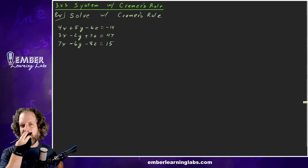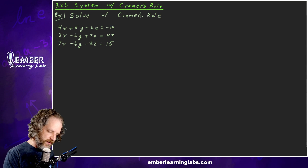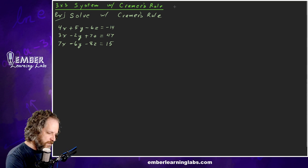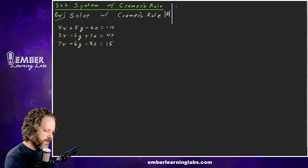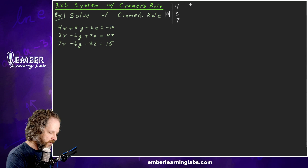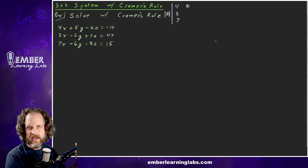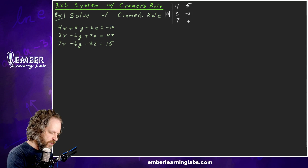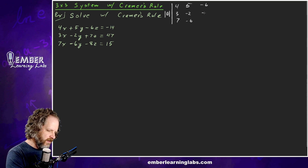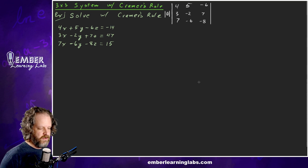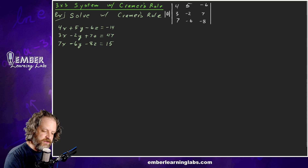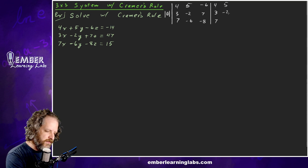Now let's do the 3x3 system with Cramer's Rule. Our D matrix uses all the coefficients. The X column is 4, 3, 7; the Y column is 5, negative 2, negative 6; and the Z column is negative 6, 7, negative 8. We need to find the determinant, so we rewrite the first two columns: 4, 3, 7 and 5, negative 2, negative 6.